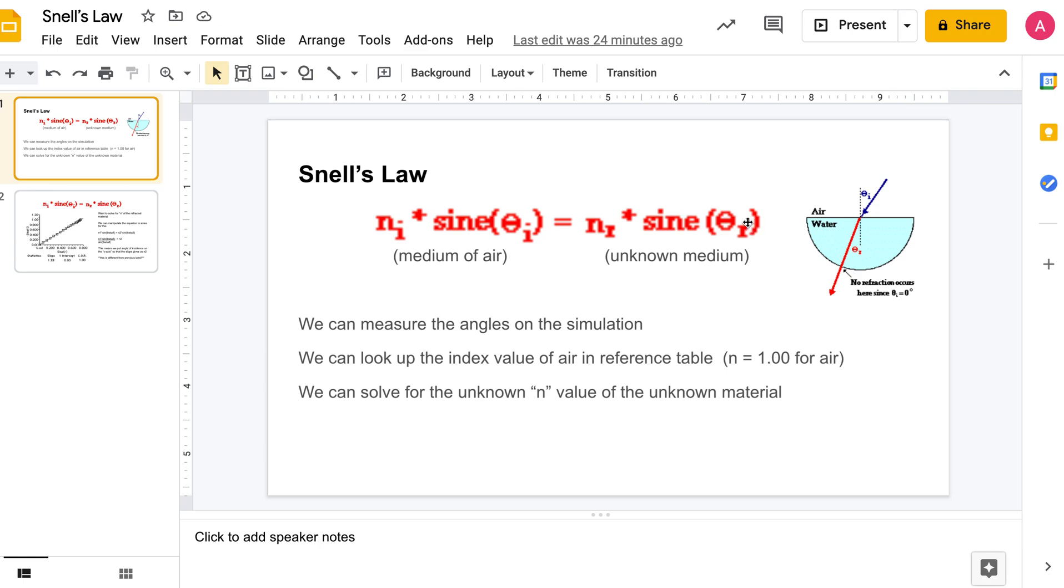This picture on the right shows air and water, so we'd measure from the normal our angle of incidence and our angle of refraction here. In this case they happen to know that this is water, so we could look up the index values of air and water in the reference table.